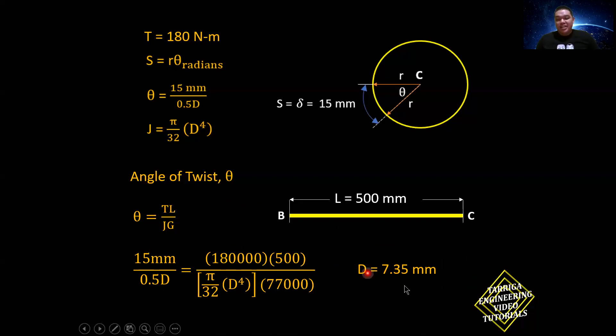Take note, we have an allowable torsional shearing stress, and we need to account for that one also. Torsional shearing stress, that is in the formula of TR over J, where T is the torsion again, R is the radius of curvature, and J is the polar moment of inertia. From that substitute, anyway, let's have the givens. That is 80 megapascal.